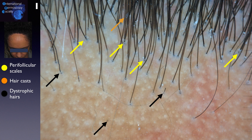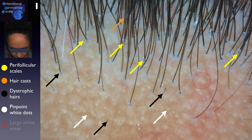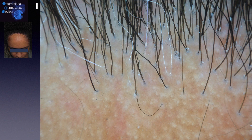The more frequent these findings are, the more intense the inflammatory activity is. Furthermore, there are two types of white dots: the first are the pinpoint white dots representing the eccrine duct openings, and the others are the larger white areas reflecting the fibrotic hair follicle. Here we have another tricoscopy image from the same patient where we can see absence of vellus hairs, scales, polytrichia, and one black dot.